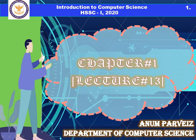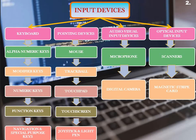Hardware is something which is tangible — something which you can touch, see, or feel. Hardware has further types like input devices, output devices, storage devices, etc. Today we are starting the first topic of hardware, that is input devices.